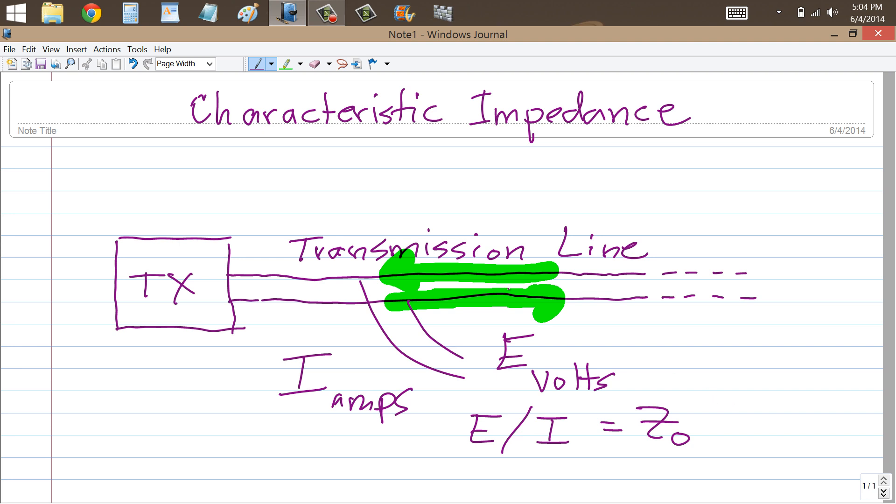In a parallel wire transmission line, typically the ratio of E to I is on the range of 300 to 600. And because we're dividing volts by amps, that normally in a DC circuit gives us resistance in ohms. So we also can refer to the characteristic impedance of a transmission line as a value in ohms.